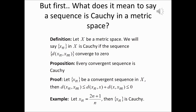In this lecture we're going to discuss what it means to say a sequence is Cauchy. By definition, a sequence is said to be Cauchy if the sequence of ordinary distances between the n-th term of the sequence and the m-th term of the sequence converges to zero.